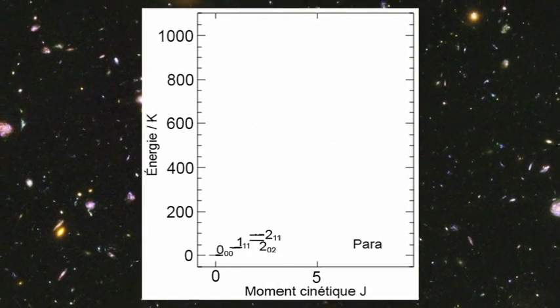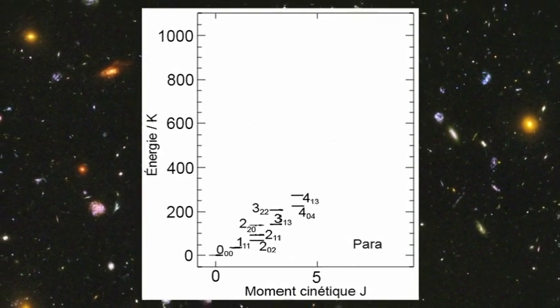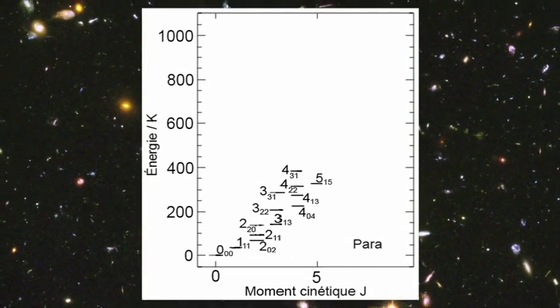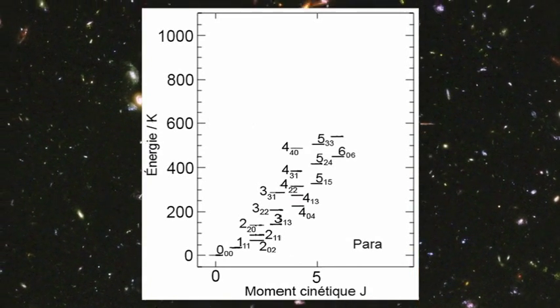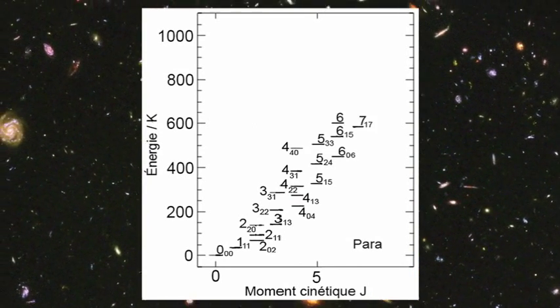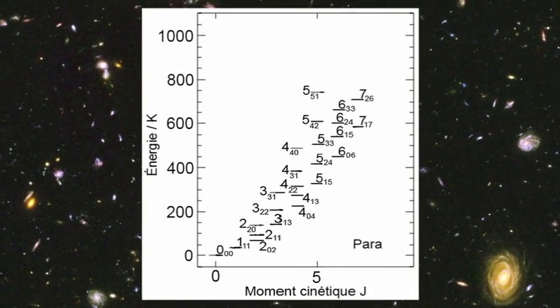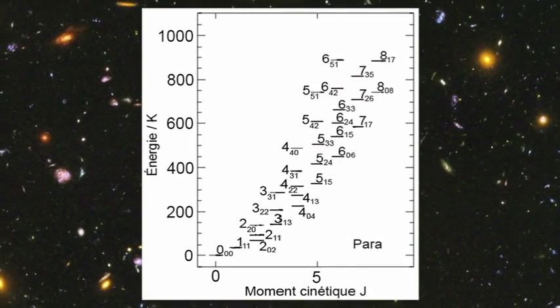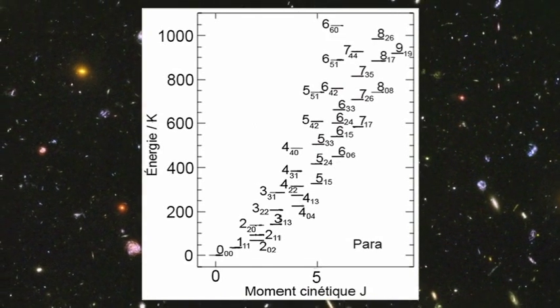In para-water, the sum of the two indices adjoined to each allowed value of the angular momentum J is always an even integer. Similarly to ortho-water, the higher the angular momentum J, the higher temperature and the faster the rotation motion of para-water, provided of course that temperature is at least minus 220 Celsius.